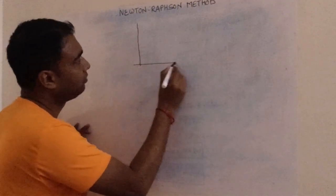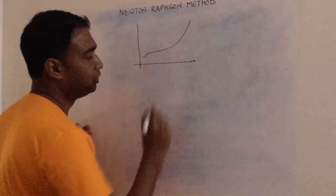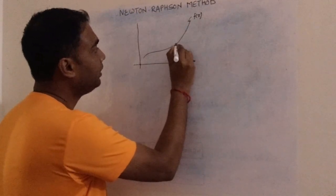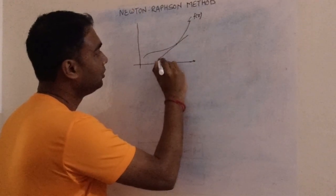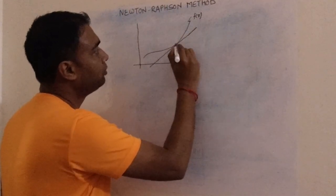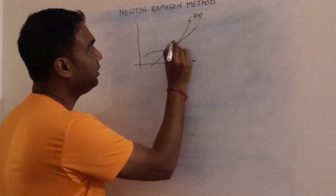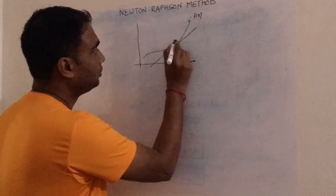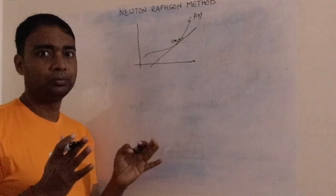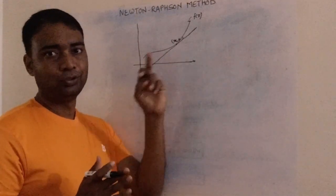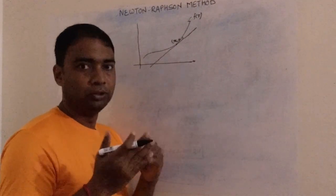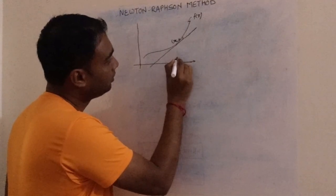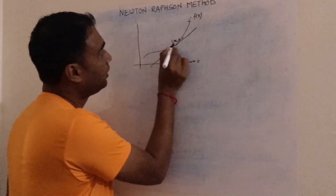Let me draw a graph. Let this be any arbitrary function — any curve. This is a tangent touching the function at a point. Let that point be x1, y1, since we are in a two-dimensional coordinate system. So x1 is the horizontal coordinate and y1 is the vertical coordinate of the point where the tangent touches the curve.